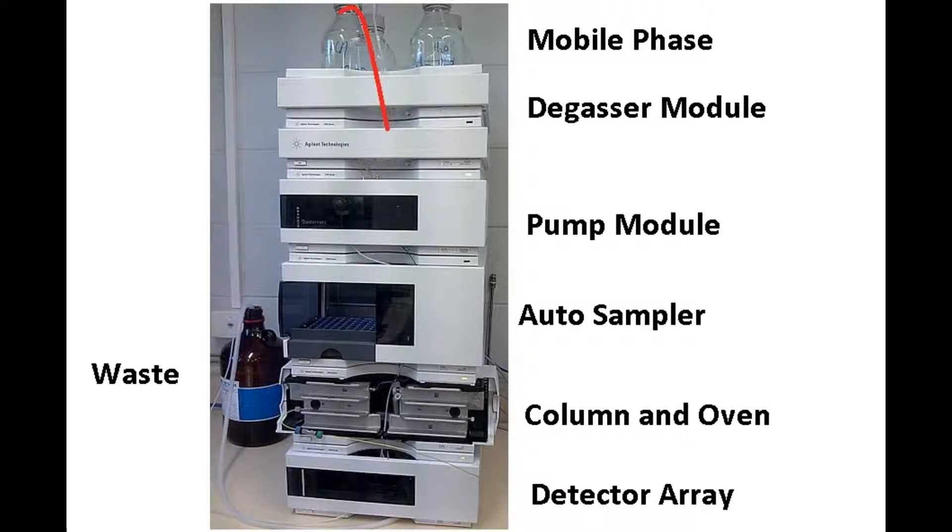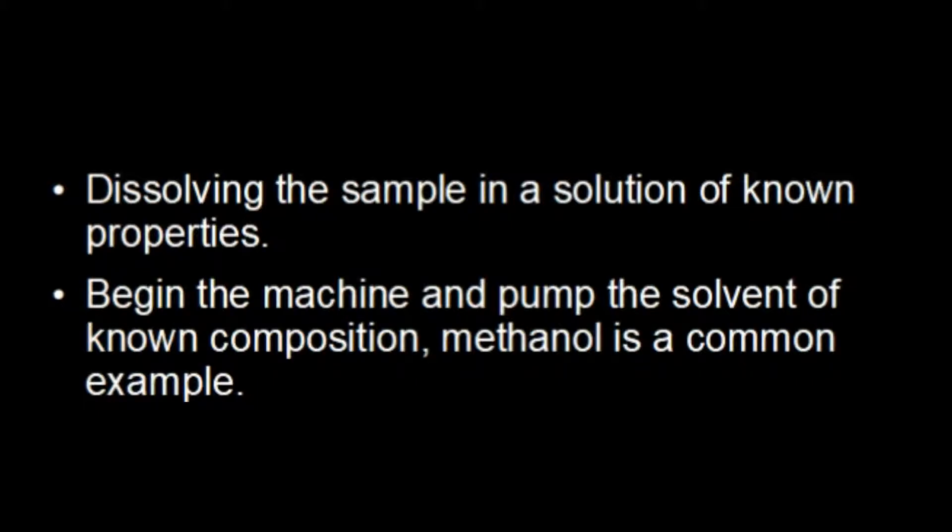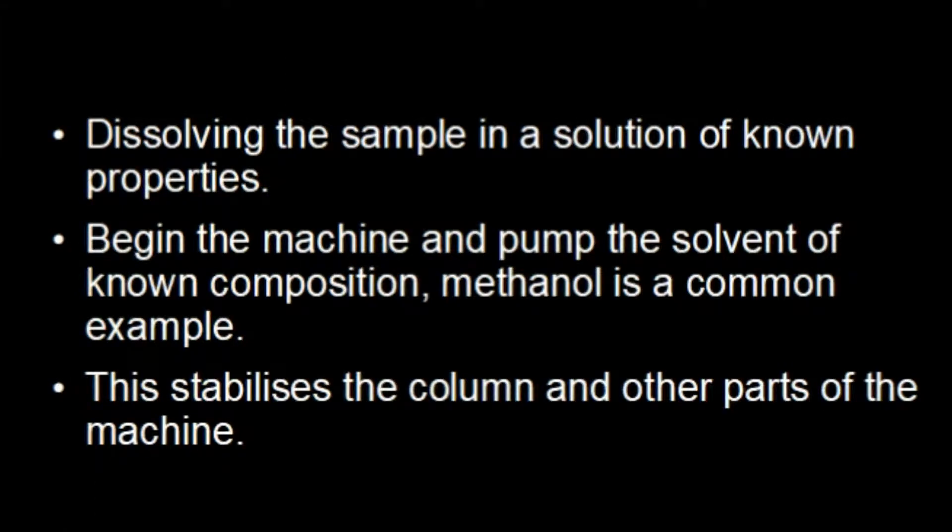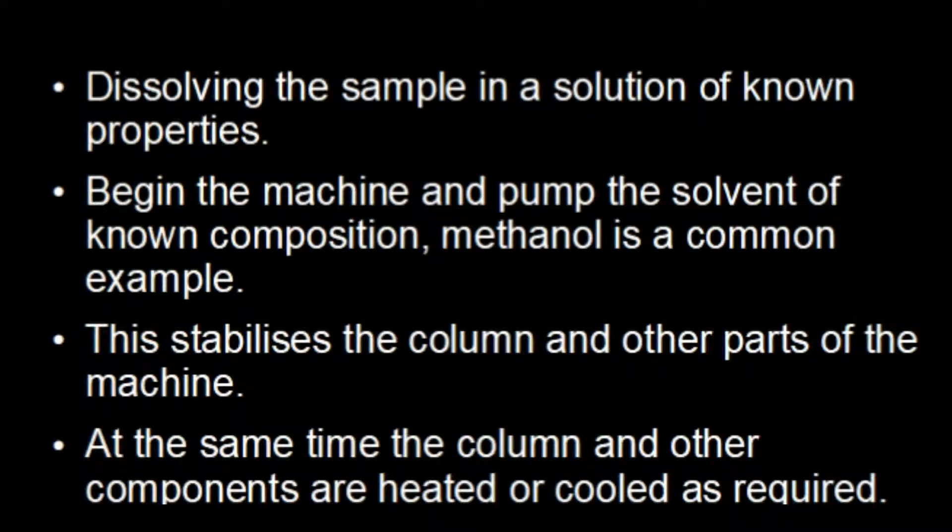The simplest version involves dissolving the sample in a solution of known properties, beginning the machine and pumping the solvent of known composition into the machine. This stabilizes the column and other parts. At the same time, the column and other components are heated or cooled as required.